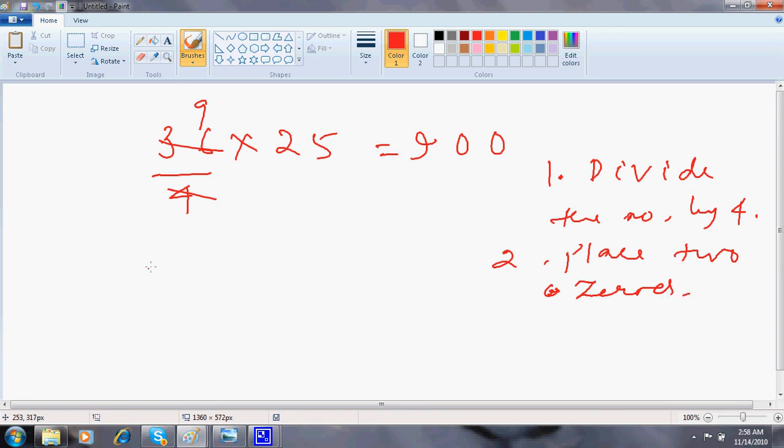Proof of this is also simple. 36 into 25. What am I doing is I'm multiplying and dividing by 4. So this 25, such a big figure becomes 100. 100 multiplication is just placing 2 zeros after the number. So here I go. This is 9. So this is 900.